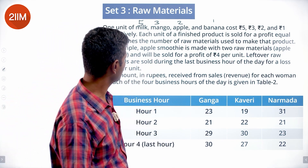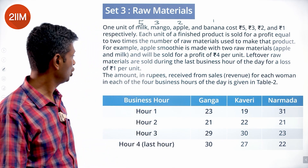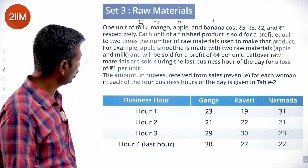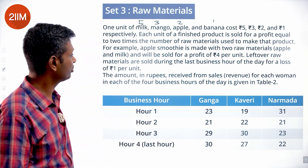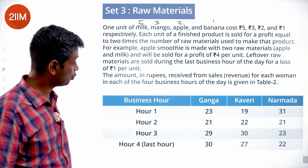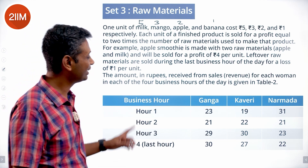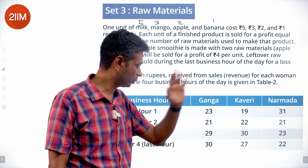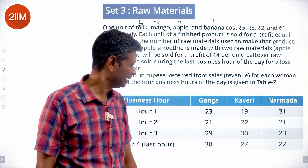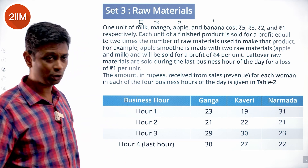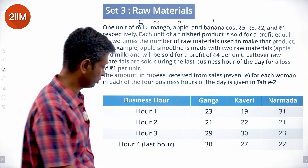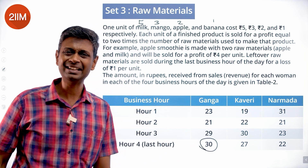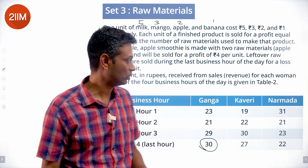Leftover raw materials are sold during the last business hour for a loss of 1 rupee per unit. The amount in rupees received from sales for each woman in each of the four business hours of the day is given in Table 2. The raw materials leftover are sold in the last hour, so this is not just sale — this is sale and leftover combined.